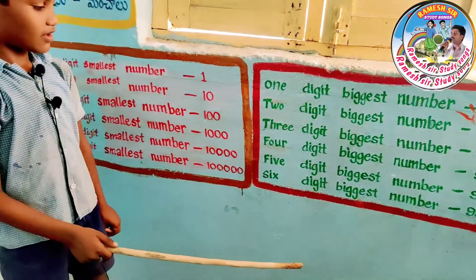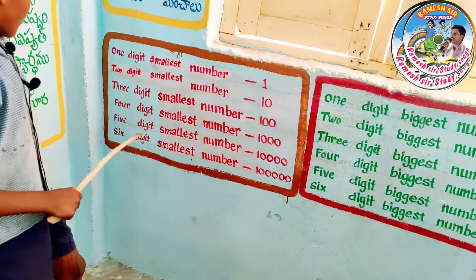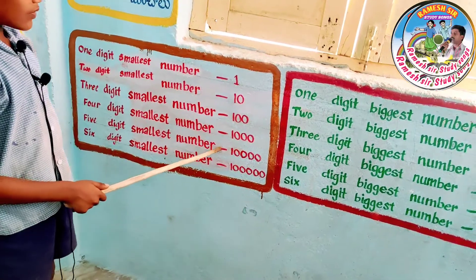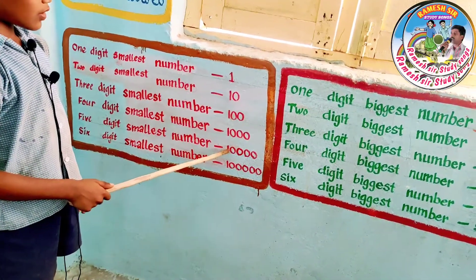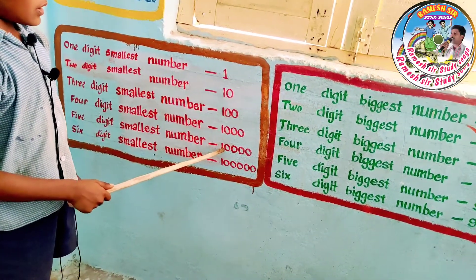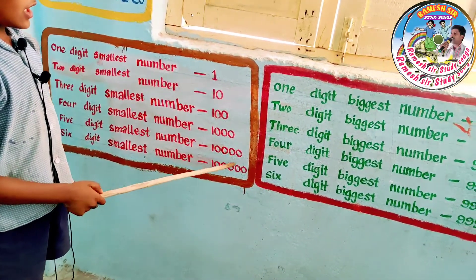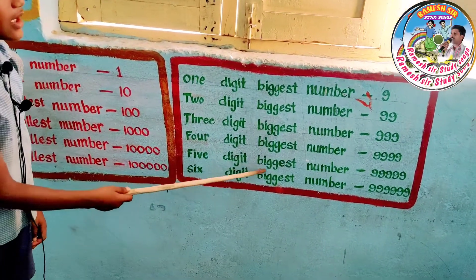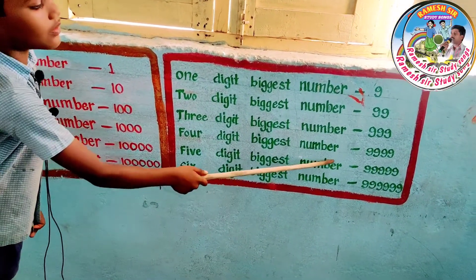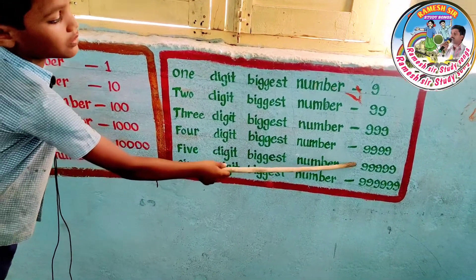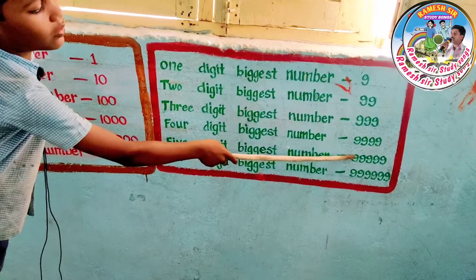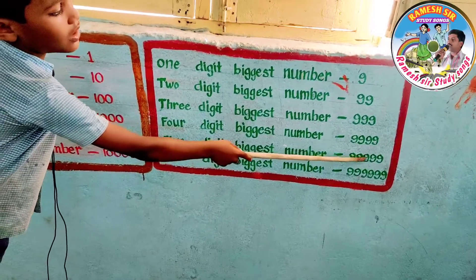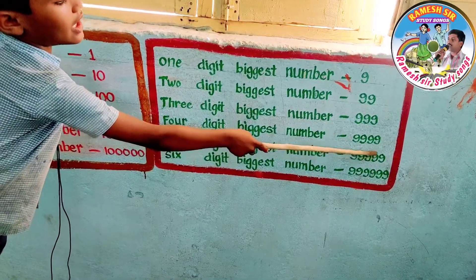Five digits smallest number: ten thousand. Five digits biggest number: ninety-nine thousand and ninety-nine.